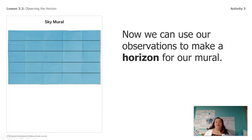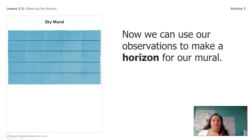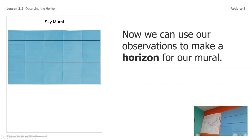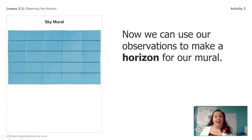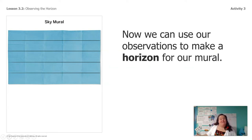And then you're going to use those observations to make a horizon on our mural. So again, we have to be flexible with this part too. I made my own sky mural here with the pictures that I drew. So that's one thing we'll have — my sky mural that we can use for the rest of the investigations. And maybe you're working on these lessons with your classroom teacher and maybe they have a great idea for how you guys can create a sky mural together.